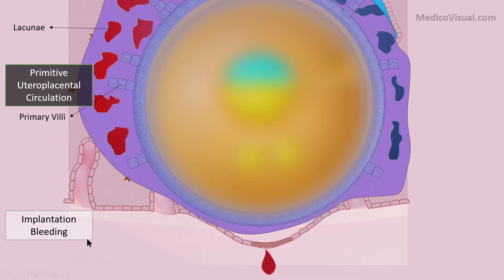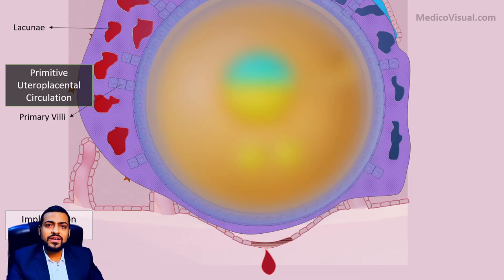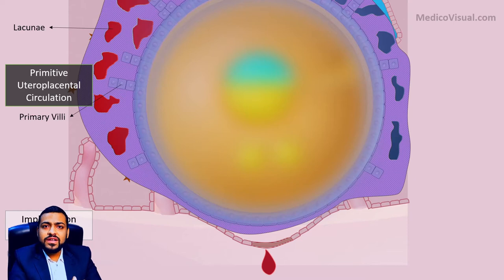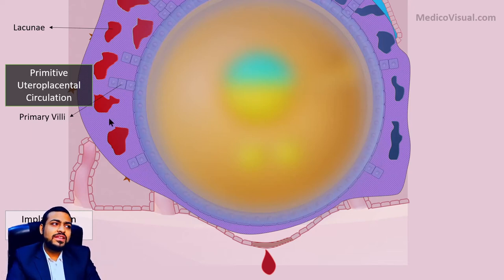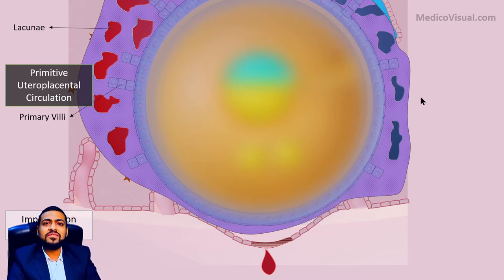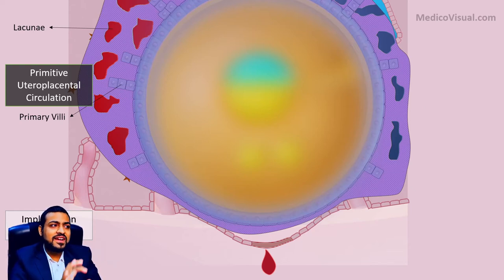Let's review what is happening with the trophoblast during the second week of development. Initially the syncytiotrophoblast lies only above the embryonic pole, but as it grows further the embryo is surrounded by syncytiotrophoblast from all sides. Then lacunae are formed within the syncytiotrophoblast and uteroplacental circulation starts, and finally the primary villi are formed by the cytotrophoblast. These are the changes that occur in the trophoblast during the second week of development.